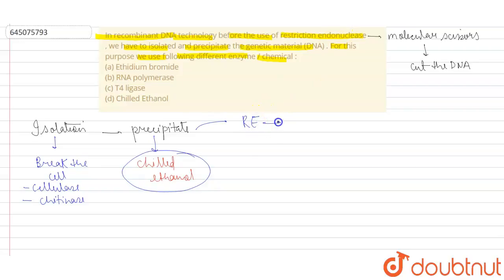After that precipitation, it has been cut by the use of RE, that is restriction endonuclease. After that, it is transferred, or basically the gene of interest is added into the vector, and then the vector is basically ligated with the gene of interest with the help of ligase and is then transferred into the host.